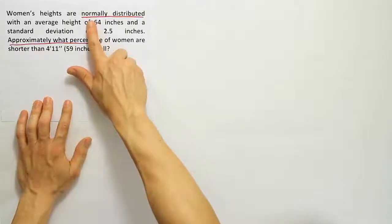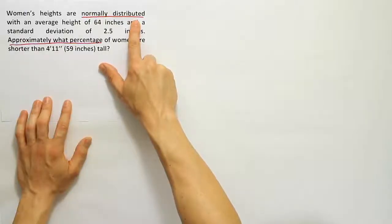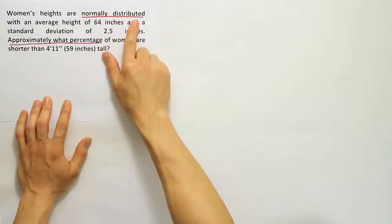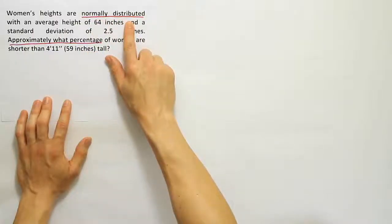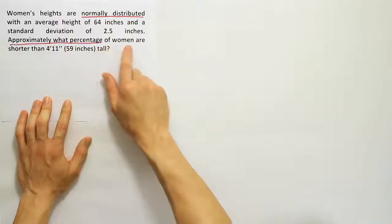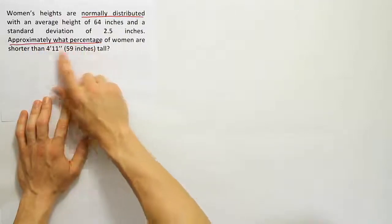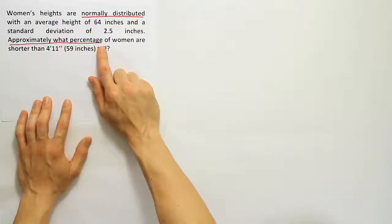So I've underlined some key phrases here. Normally distributed jumps out at me in this problem. That's indicating that we're dealing with a bell curve. So women's heights fall under the bell curve shape distribution. They tell us the average is standard deviation, and then they ask us approximately what percentage of women are shorter than this height.